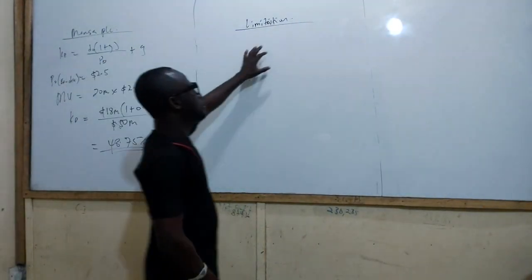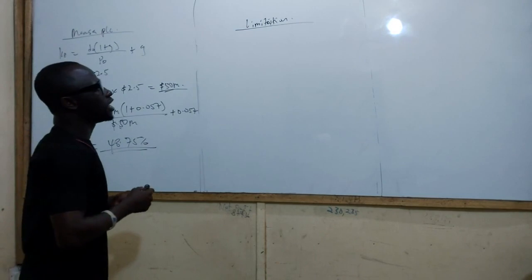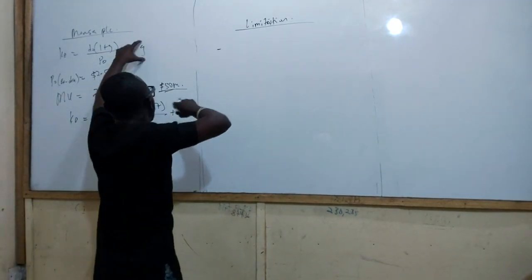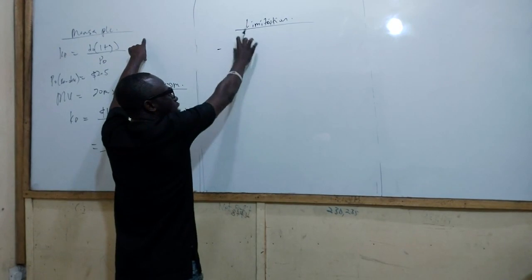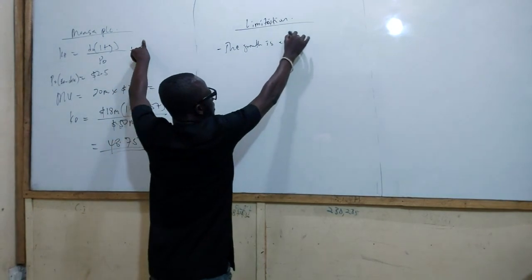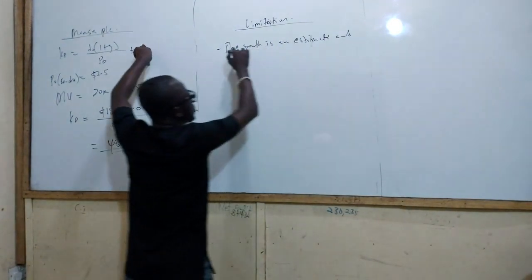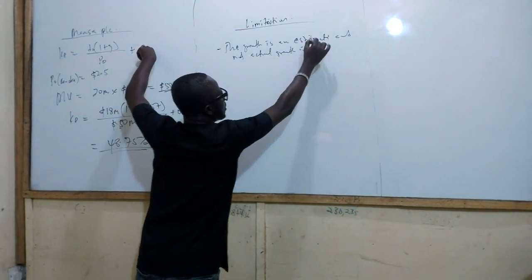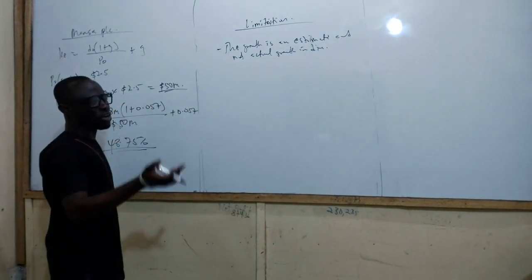Now there are some limitations to using the dividend model to calculate KE. Number one: the growth rate we calculate is not an accurate growth rate — it is just an estimate. That is why there are various methods of calculating the growth rate. So the growth rate being an estimate, and not actual growth in dividend, is one limitation.